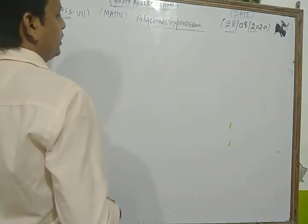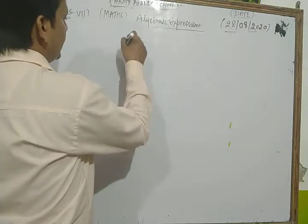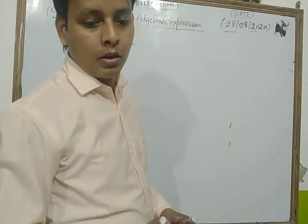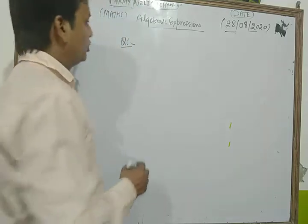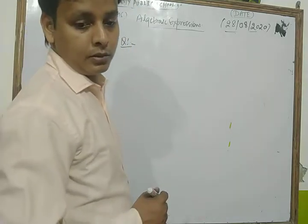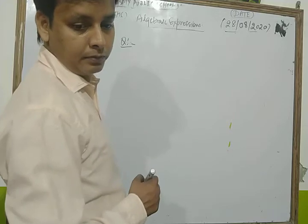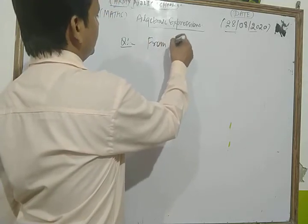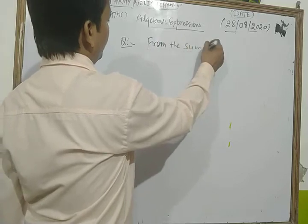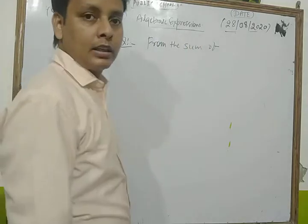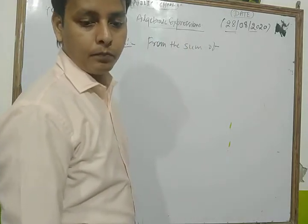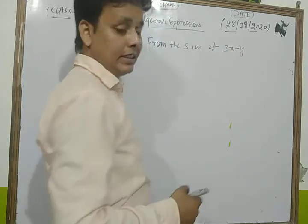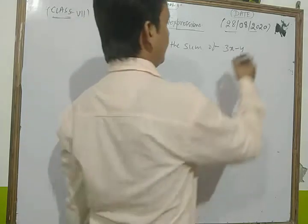Now let's take a question based on addition and subtraction of algebraic expressions. The question is: from the sum of 3x minus y plus 11 and minus y minus 11, subtract 3x minus y minus 11.